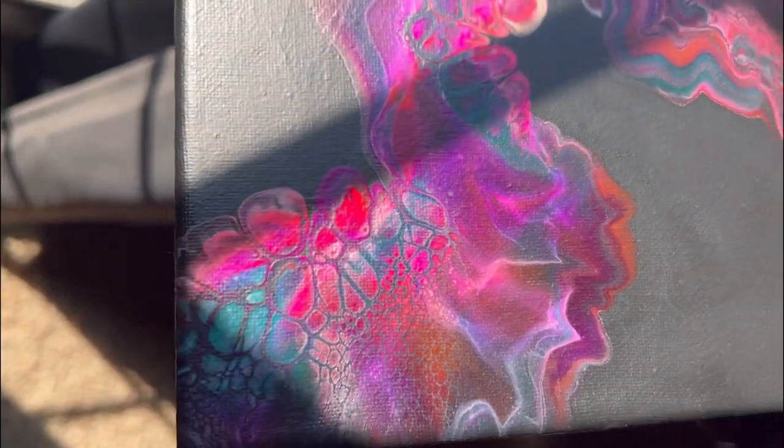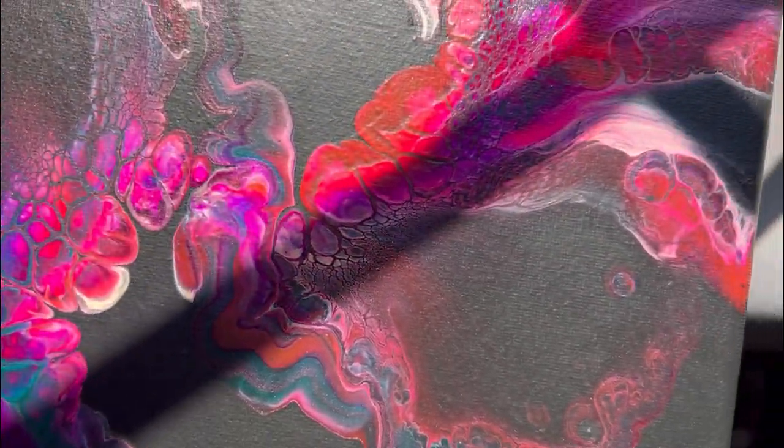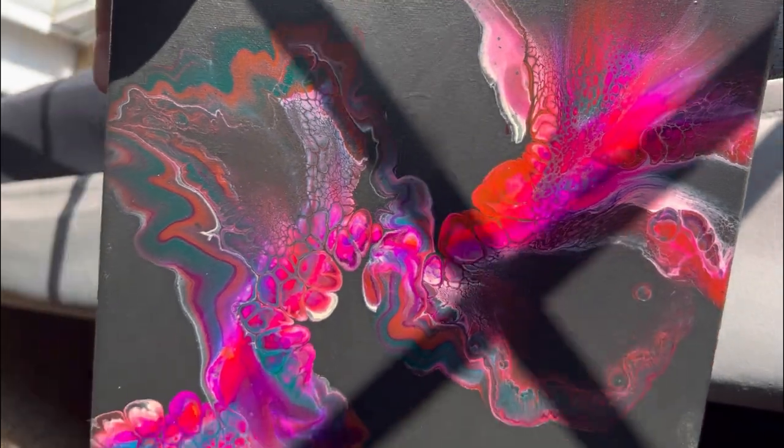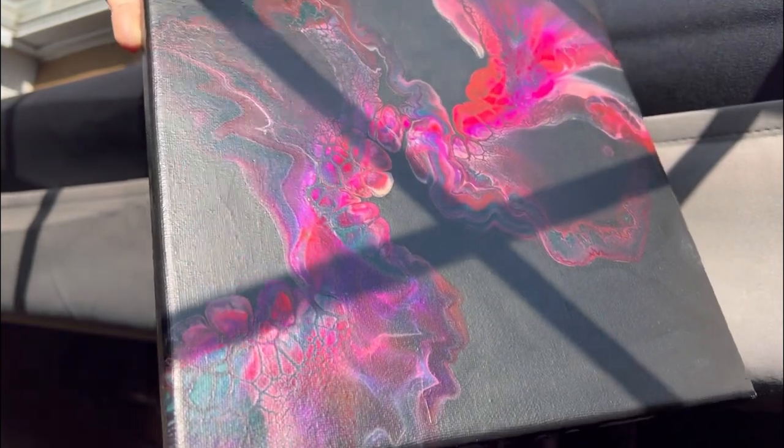All right, check this out! This is the natural sunlight. The middle part of the dutch pour looks awesome and very bright. The edges not so much, but I think that's because of the black paint.